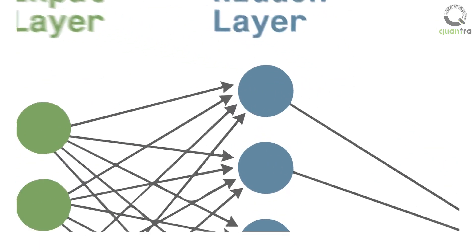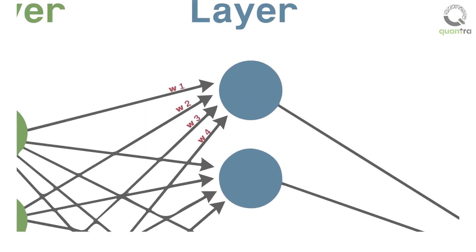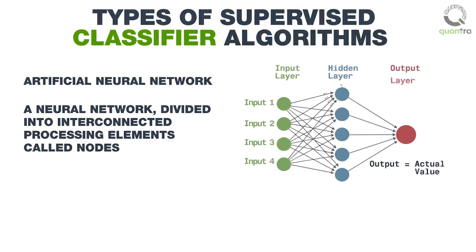The hidden layer processes the inputs, by assigning random weights to each of the inputs, and taking a summation of them along with a small value of bias. This value is then processed using activation function, to provide an output. The output is then matched to the actual value to verify the process. If the output matches and there is no error element, then it is good to go.